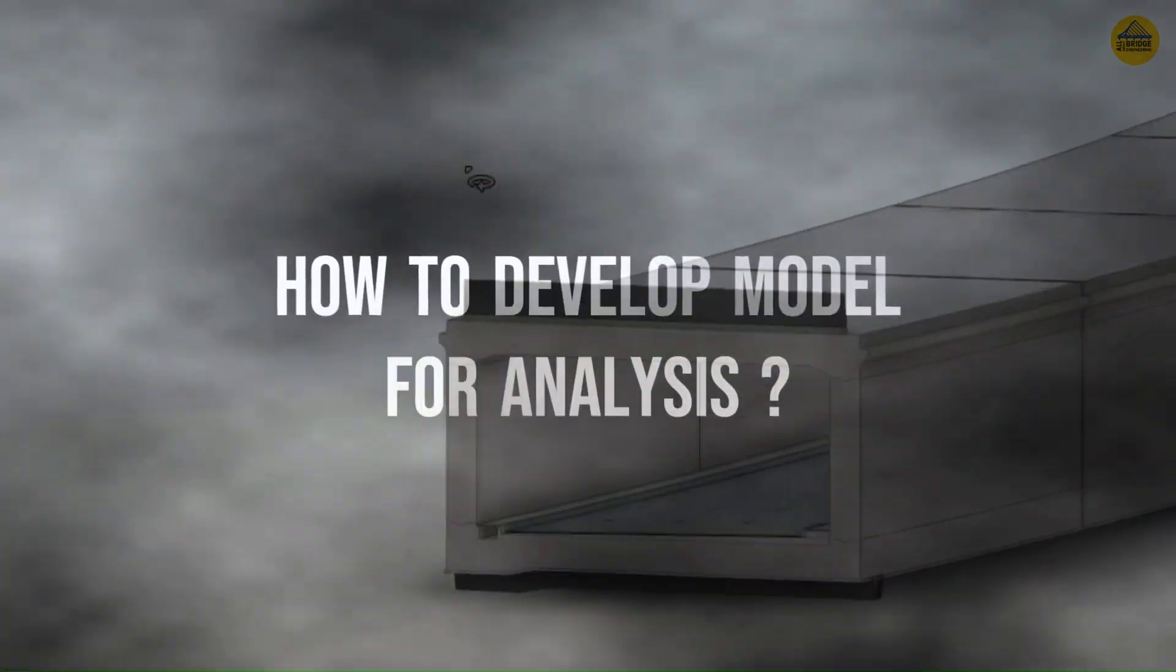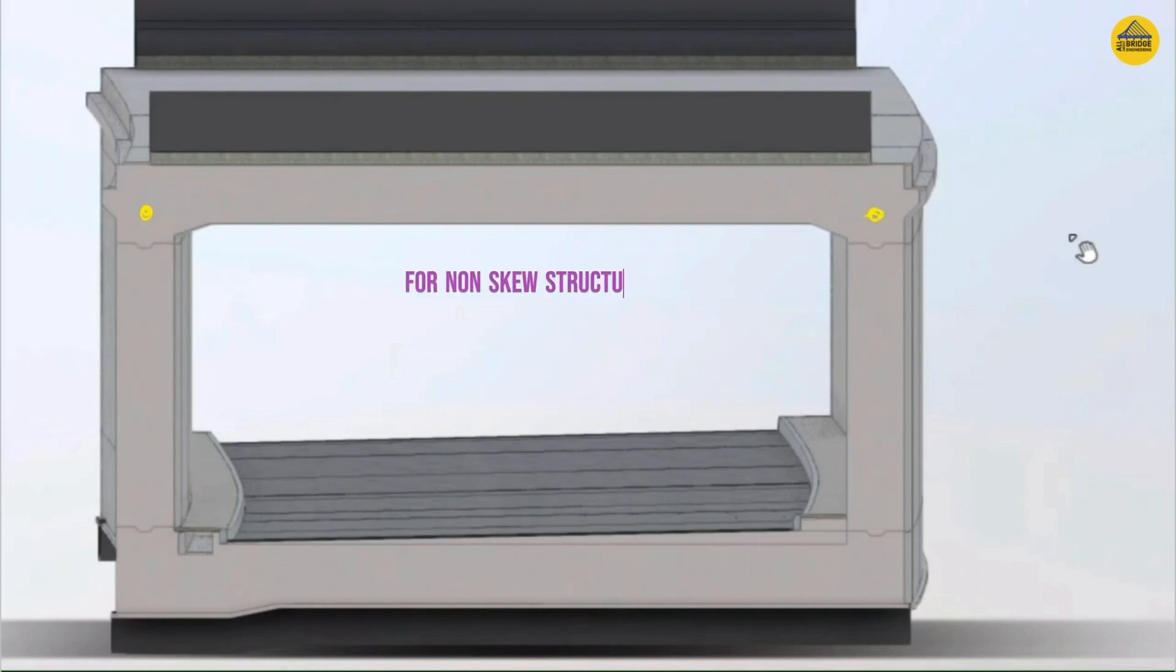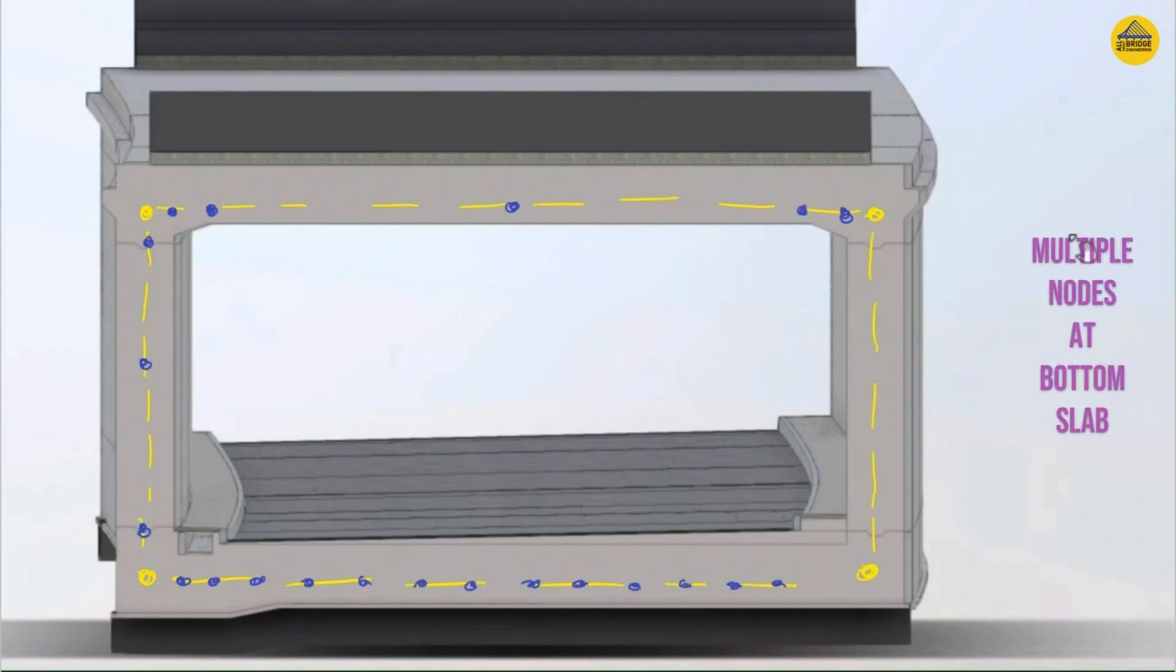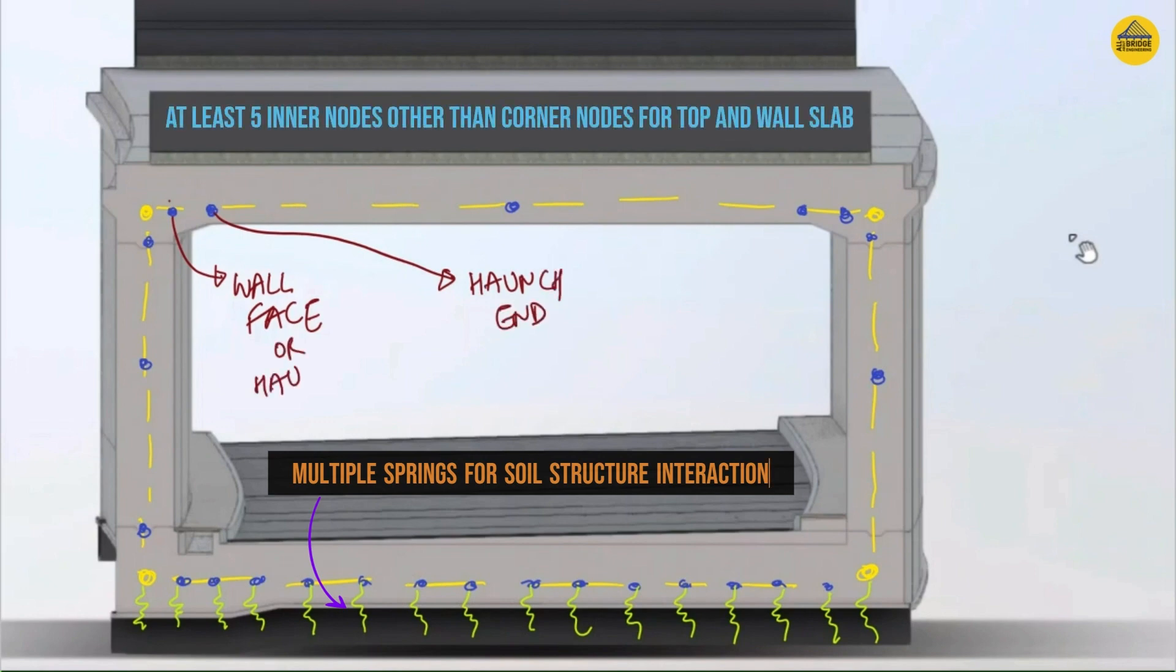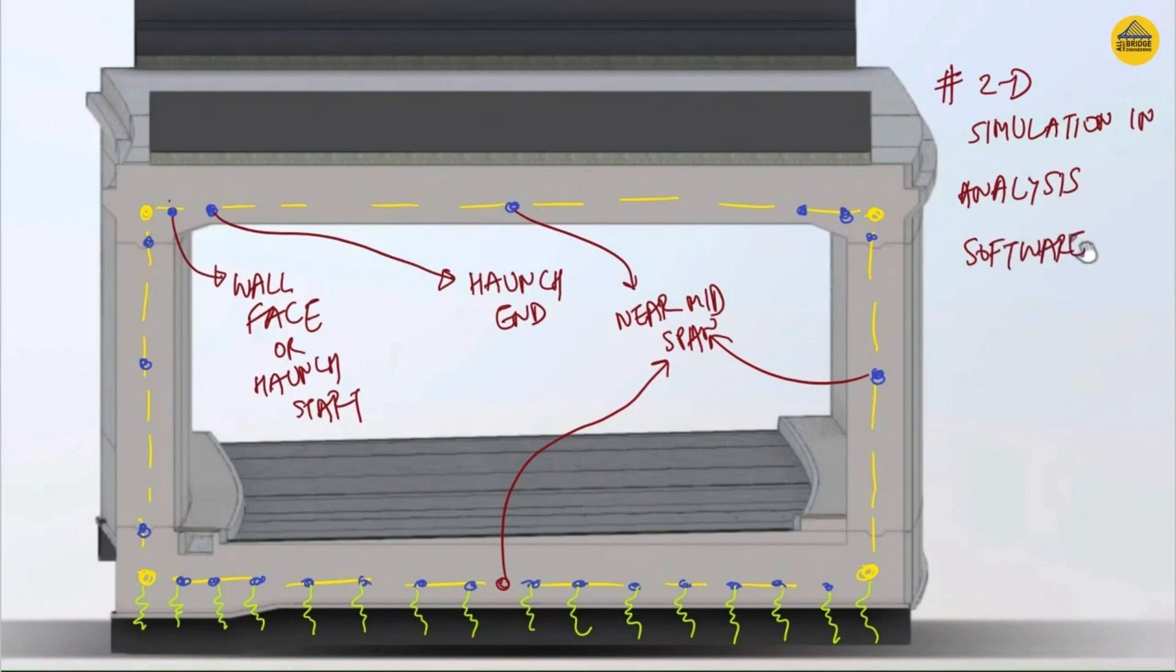Now let's focus on how to develop a model for analysis of such structures. For many structures that are non-skew, per meter analysis and a line model is sufficient. All you need to do is create four corner nodes, connect those nodes, and then provide as many intermediate nodes as possible. It's highly recommended that at the bottom slab multiple nodes are there so that soil structure interaction could be simulated by effective contributory area of the nodes. But at all other junctions like the wall and the top slab, minimum five nodes between the corner nodes are to be there. These nodes correspond to various locations like the haunch start, haunch end, and the mid span. As many nodes you provide, it will be better simulated in the tables because the results are always present for nodes in the tables in any analysis software.